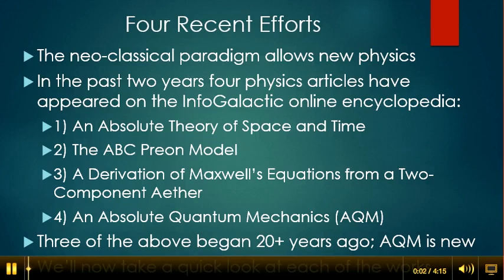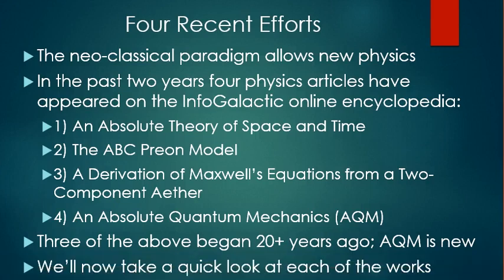The neoclassical paradigm just introduced allows us to investigate some new physics ideas. In the past two years, four physics articles have appeared on the InfoGalactic online encyclopedia: an absolute theory of space and time, the ABC prion model, a derivation of Maxwell's equations from a two-component ether, and an absolute quantum mechanics. The first three began over 20 years ago, while the absolute quantum mechanics effort is new. We'll now take a quick look at each of the works.